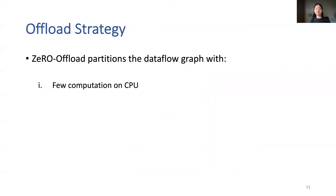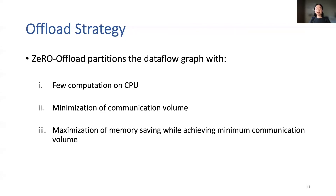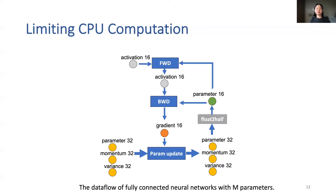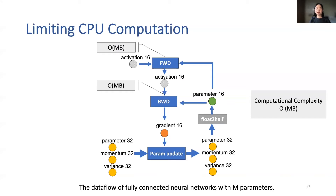Zero Offload partitions the data flow graph such that minimal computation happens on the CPU, because CPU computation throughput is multiple orders of magnitude slower than GPU. Zero Offload guarantees minimization of communication volume between CPU and GPU memory, and maximizes memory savings while achieving the minimum communication volume. The compute complexity of deep learning training per iteration is generally O(M × B), where M is the model size and B is the effective batch size. Both forward and backward propagation have complexity O(M × B) and must be done on GPU. The computation of parameter updates has complexity O(M), independent of batch size, and can be offloaded to CPU.